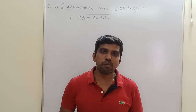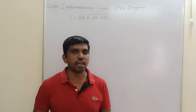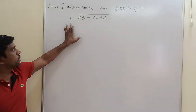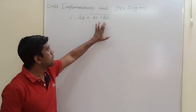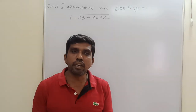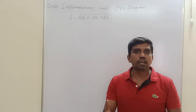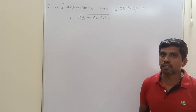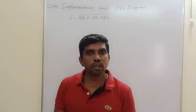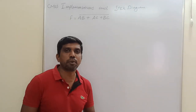In this class, I am going to discuss CMOS implementation of a Boolean expression and its stick diagram. Let me consider the Boolean expression F equal to AB plus AC plus BC, the whole part. First, the Boolean expression is converted into a static CMOS circuit. After conversion, you find the Euler path, and with the reference of the Euler path, we will draw the stick diagram. We will discuss one by one.